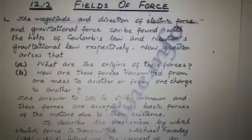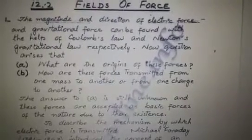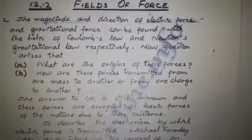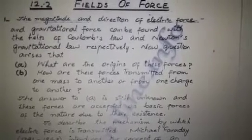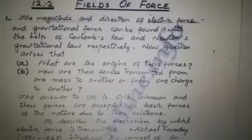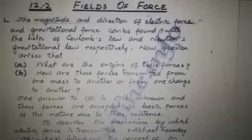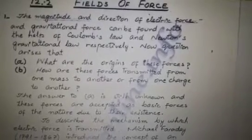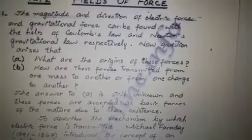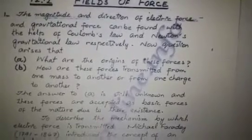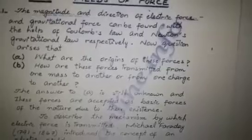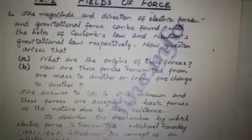Our topic is Fields of Forces. The magnitude and direction of electric force and gravitational force can be found with the help of Coulomb's law and Newton's gravitational law respectively. We have the magnitude and direction of electric force and gravitational force found by Coulomb's law or Newton's gravitational law.